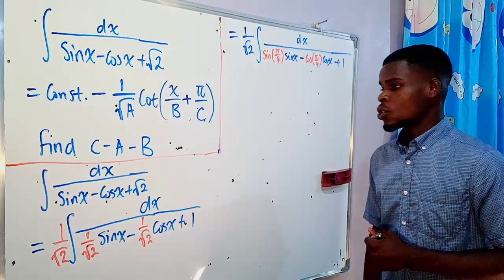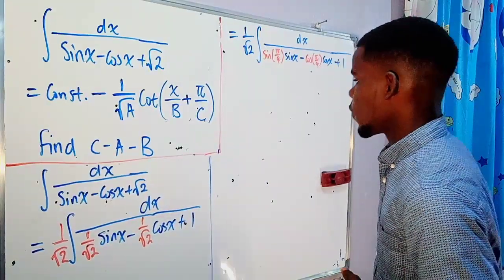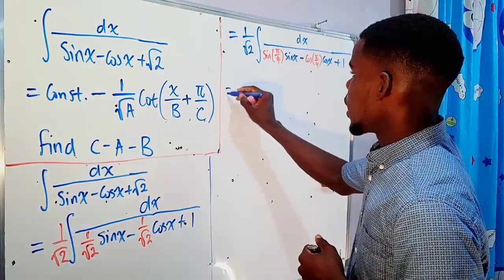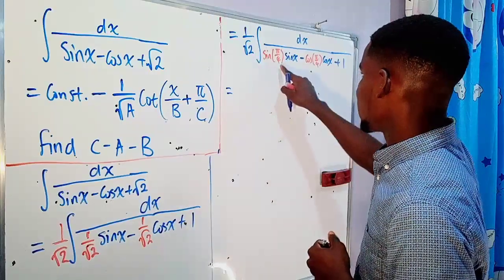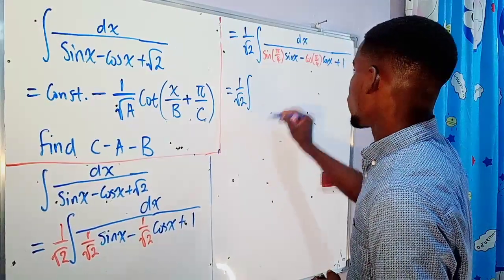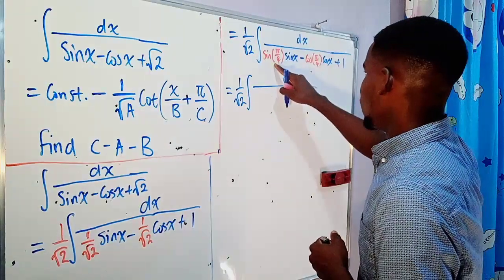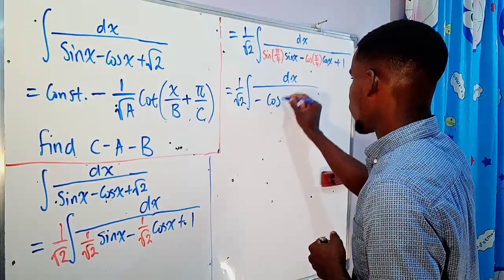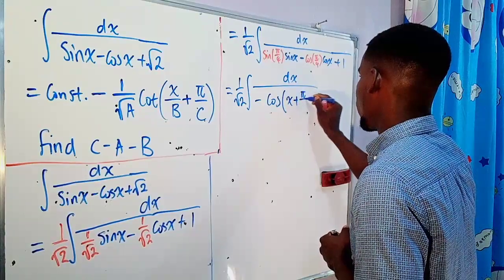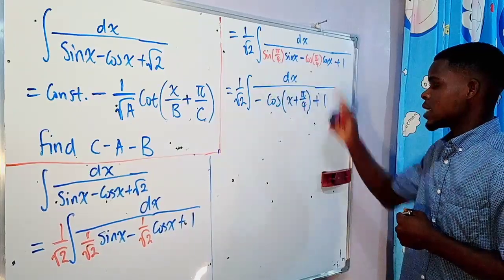Recall that cosine of the sum of two angles is cosine of the first angle times cosine of the second minus sine of the first times sine of the second — and that matches what we have, multiplied by negative 1. So the denominator becomes 1 minus cosine of x plus pi over 4, giving us the integral of dx divided by 1 minus cosine of (x plus pi/4).